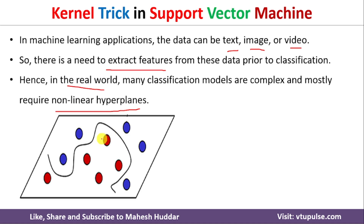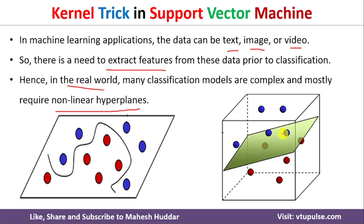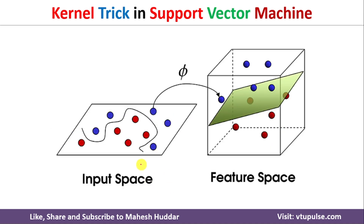But applying this in the real world is very complex. To avoid that, what we need to do is convert this nonlinear data into linear data. For example, it may be 2D data, but we can represent it as 3D data and separate it with the help of a plane. This is what is called converting the data from one space into another space. We need to apply a mapping function on the input space to convert this nonlinear data into linear data, which is called the feature space.